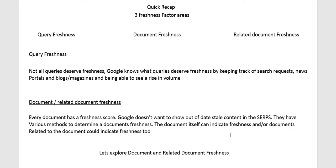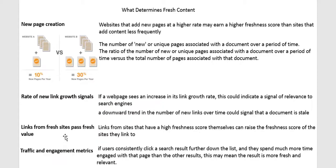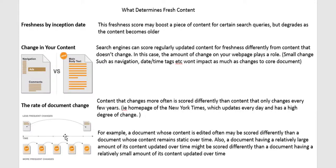There are many ways Google can determine a document's freshness: by the freshness inception date, by changing your content, by the rate of document change, by new page creation, by rate of new link growth signals, by links from fresh sites passing fresh value, and so much more.